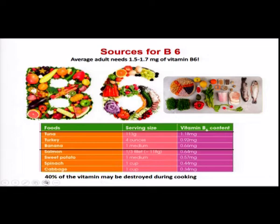It is a thermolabile vitamin, so about 40 percent of the vitamin may be destroyed by cooking. The content of this vitamin in tuna, for instance, is very high — healthy and close to meat products. For people who are vegetarians, they need to supplement with different food sources for vitamin B6 pyridoxin.